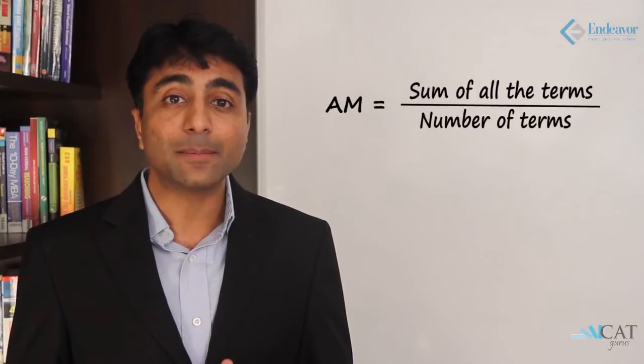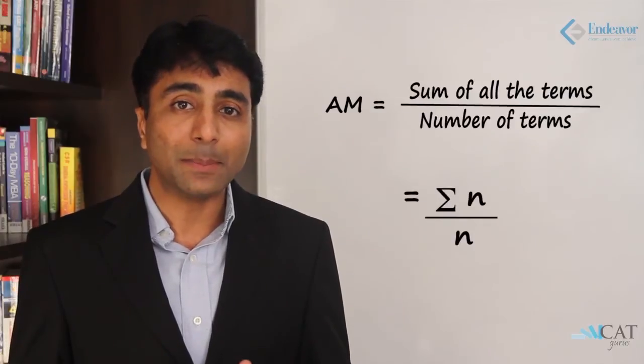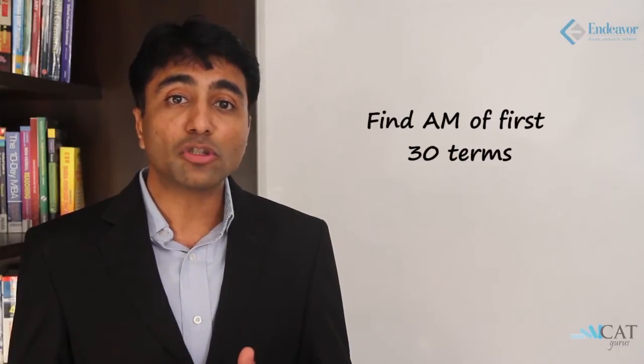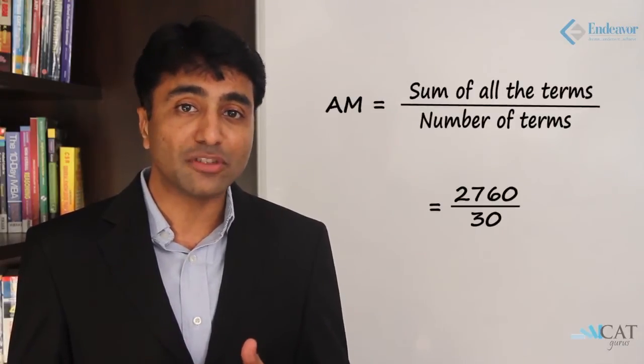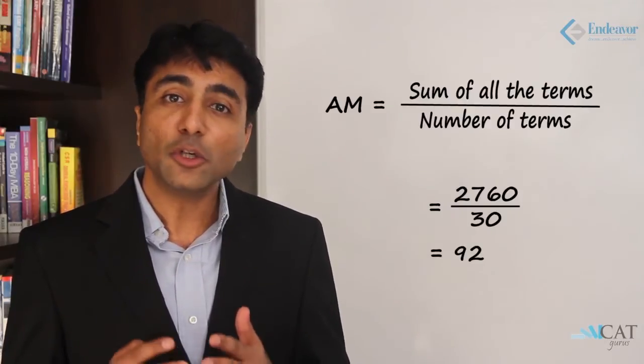The third concept is finding the average, also known as arithmetic mean. The standard formula is the summation of all terms divided by the number of terms, written as Σn / n. Continuing with the same example, the average of the first 30 terms is 2760 divided by 30, which gives an answer of 92.